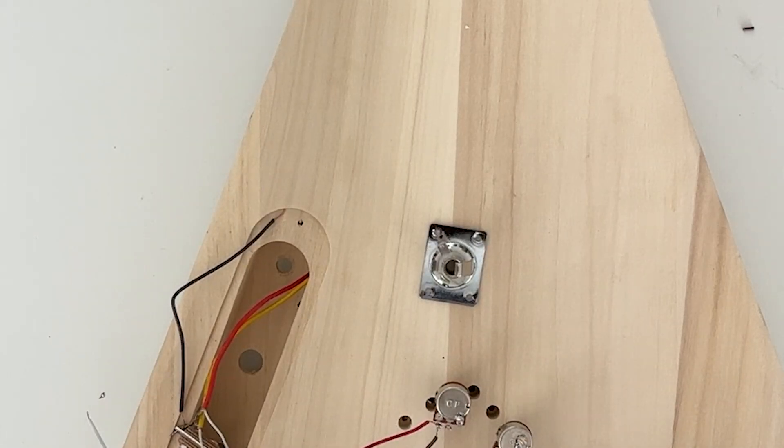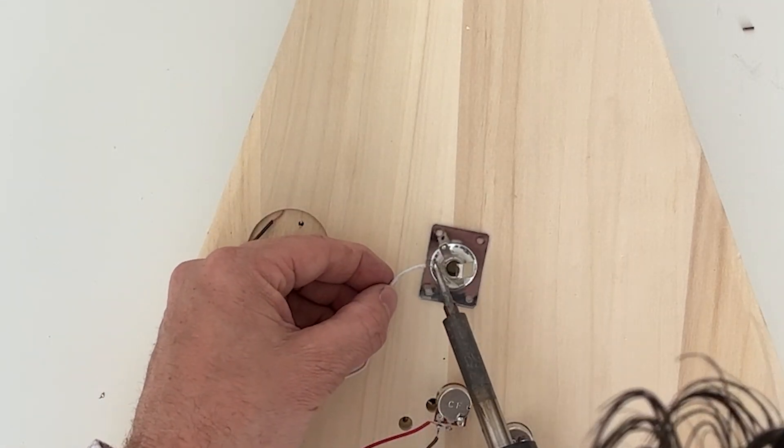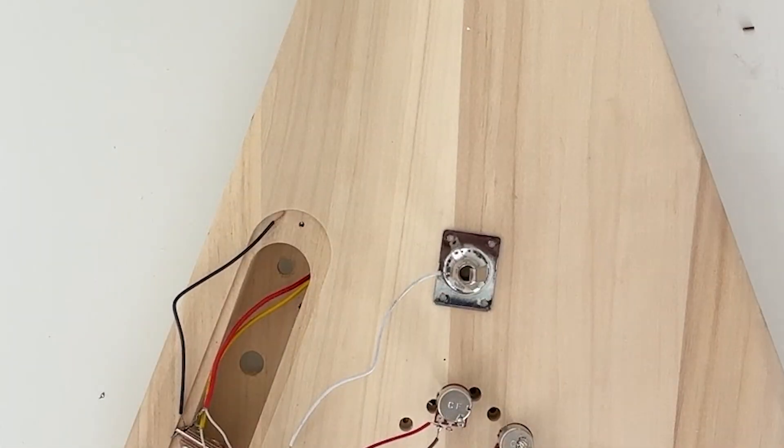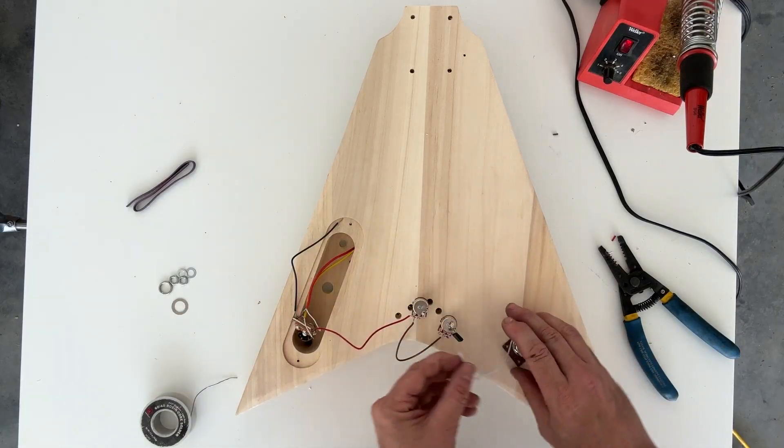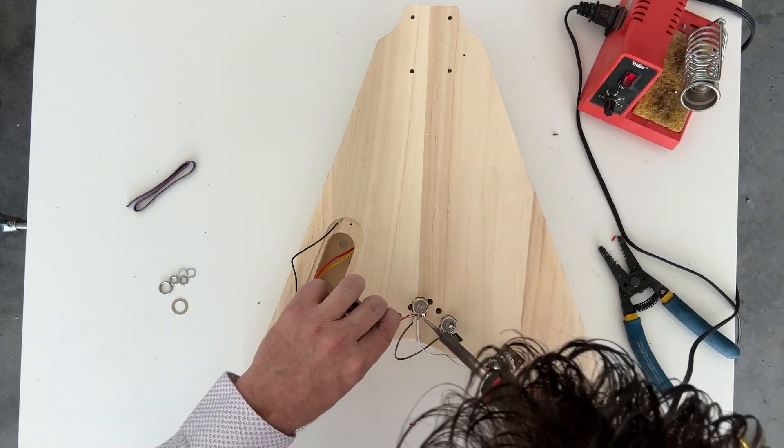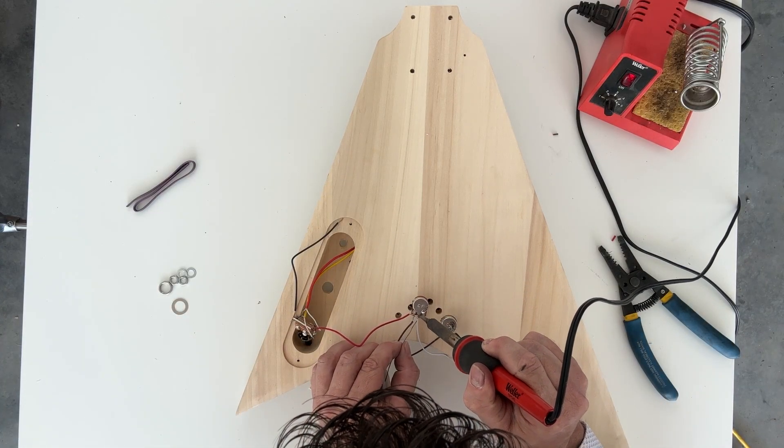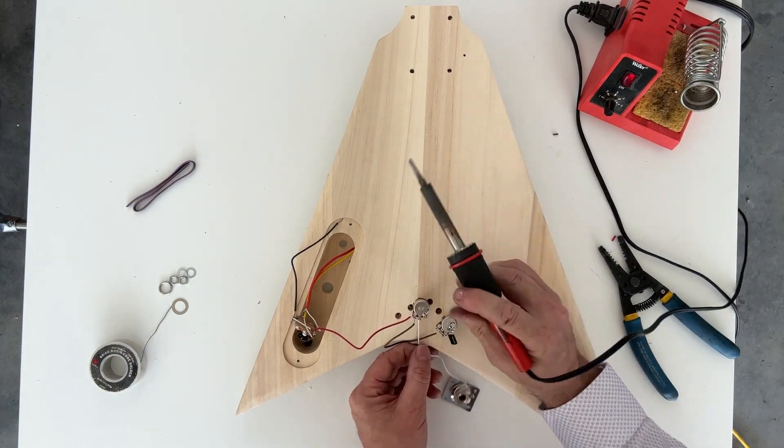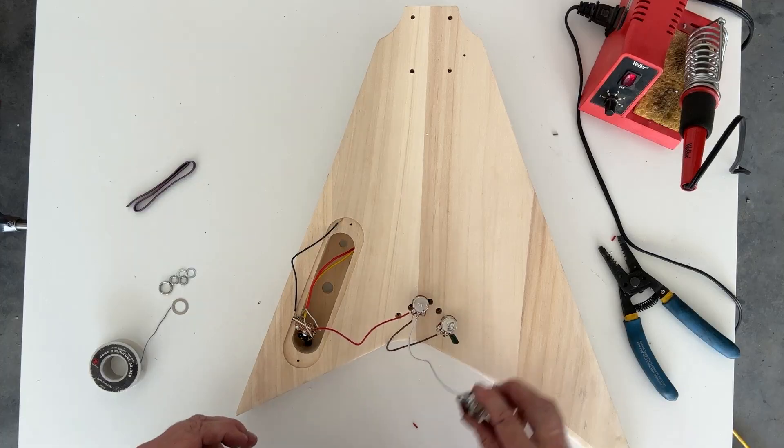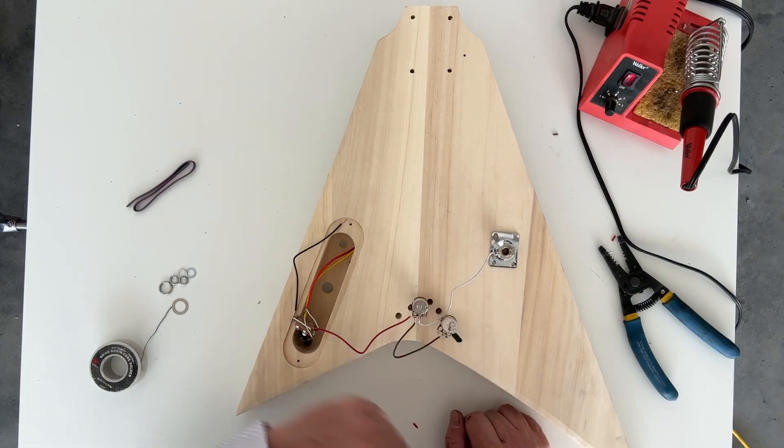I'll get a little more solder on this wire, and then the other end will connect to the center lug of your volume. So now we have signal from our pickups to the switch, from the switch to the volume and tone, and out to the output jack.